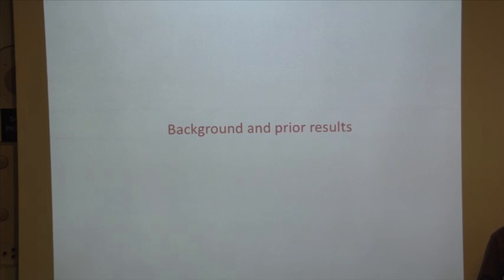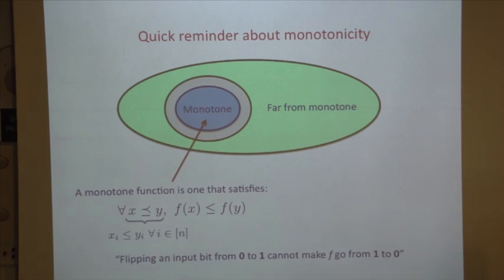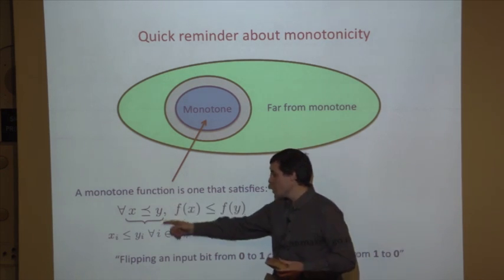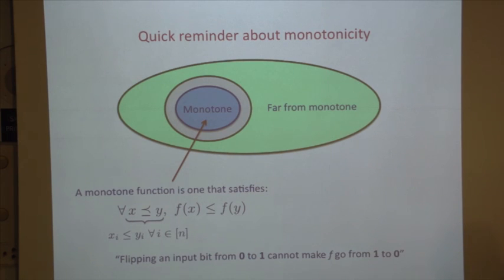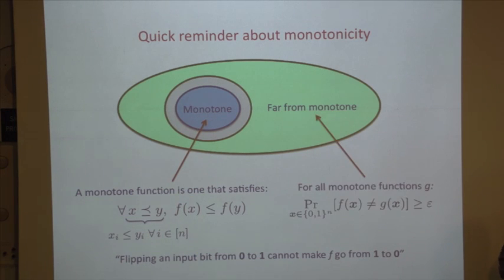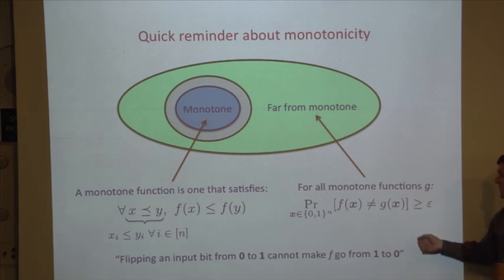What is monotonicity? A monotone Boolean function is one where we always mean monotone non-decreasing: if I have two comparable inputs, two bit strings x and y such that coordinate-wise x is less than or equal to y, then f(x) is less than or equal to f(y). Intuitively, if I have an input and flip some zeros to ones, that can't make the function change from one to zero. For far from monotone, we mean this in the standard Hamming distance sense — f must disagree from every monotone Boolean function on at least an epsilon fraction of inputs.